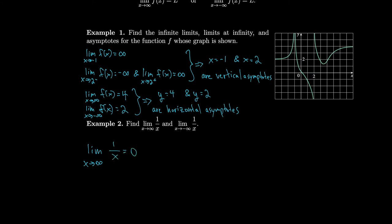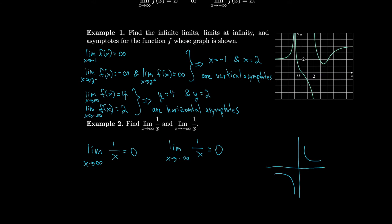Similarly, plugging in large negative numbers: 1 over negative 100 is negative 0.01, and 1 over negative 10,000 is negative 0.0001 — really tiny negative numbers. So it goes to 0 either way. This makes sense from the graph of 1/x: as we go toward infinity or minus infinity, we approach but never cross the x-axis at 0.